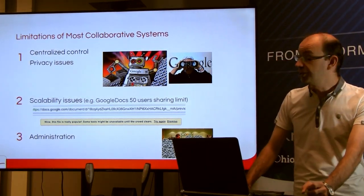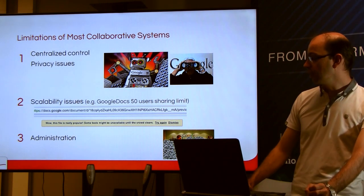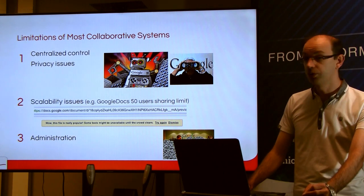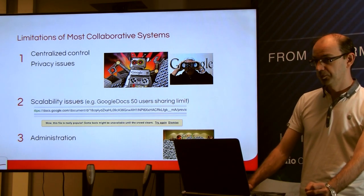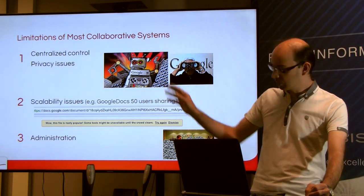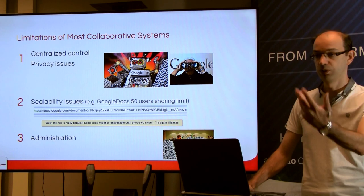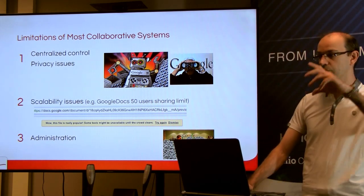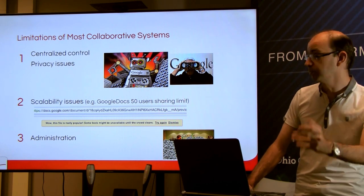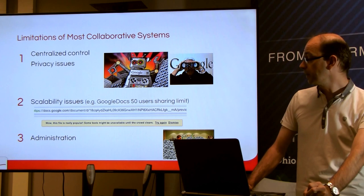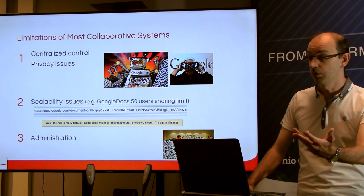Most collaborative editing systems have limitations. One is centralized control: a single authority manages the system and can potentially access your data if it is not encrypted. For instance, with Google, communication is encrypted between you and the server, but on the server itself data may not be encrypted — and they likely aren't, since recommendations are made based on your content. Furthermore, this authority can stop the collaboration at any time, and you might lose your data.